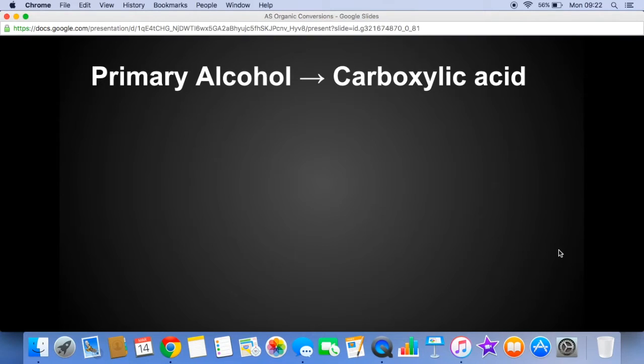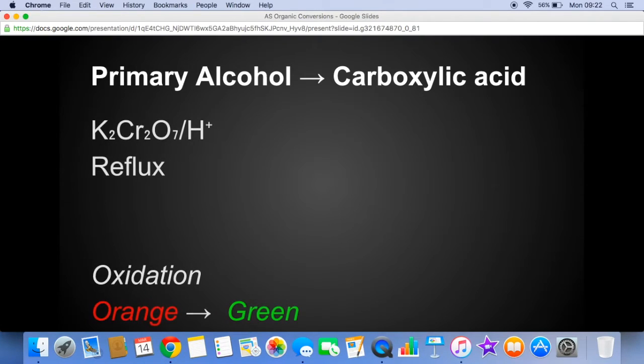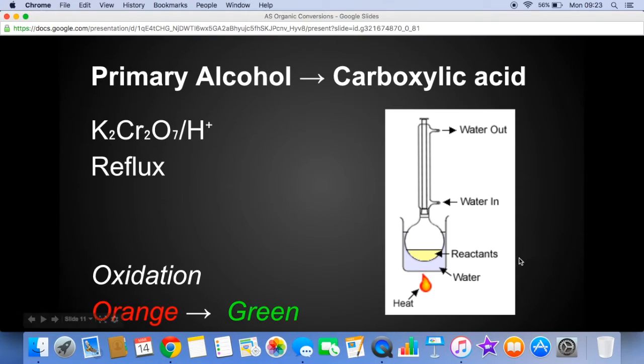Primary alcohol to carboxylic acid. So that's still acidified potassium dichromate but now we would use reflux. So instead of mild oxidation this is now full oxidation. Again the colour change is orange to green. And the reflux apparatus looks like this. And so your first oxidation would produce the aldehyde, the vapour rises but it condenses in here and drops back into the flask where there's more oxidising agent. So the second oxidation from aldehyde to carboxylic acid takes place.